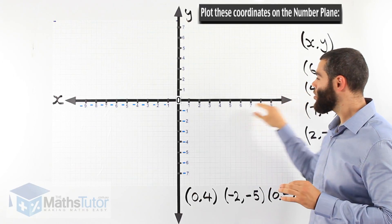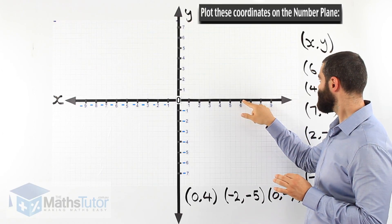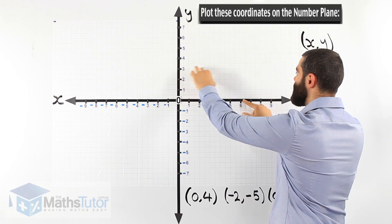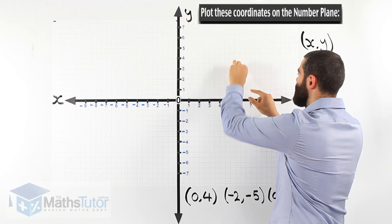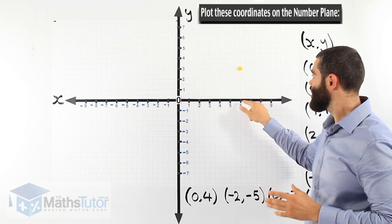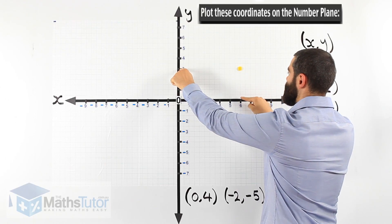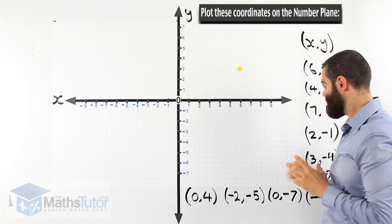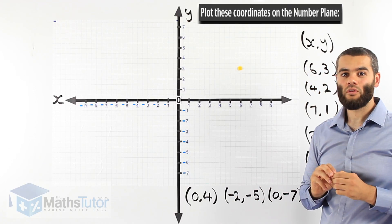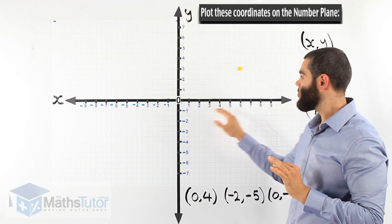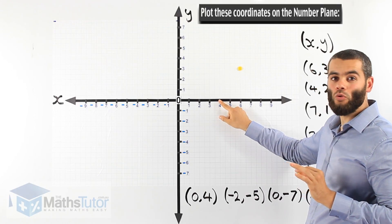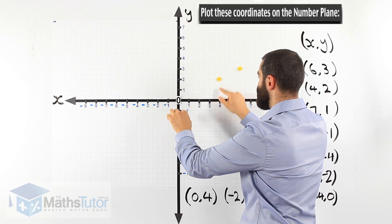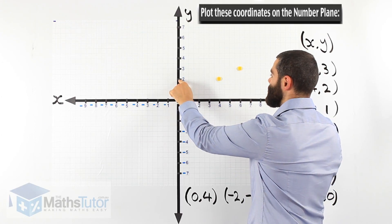For (6, 3): on the horizontal x-axis I look for 6, then on the y-axis I look for 3 — where they meet is the coordinate (6, 3). For the next point (4, 2): we start with the x-axis, find 4, then find 2 on the y-axis, and where they meet is the coordinate (4, 2).